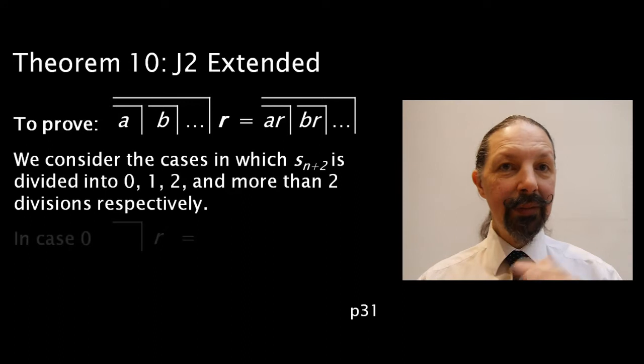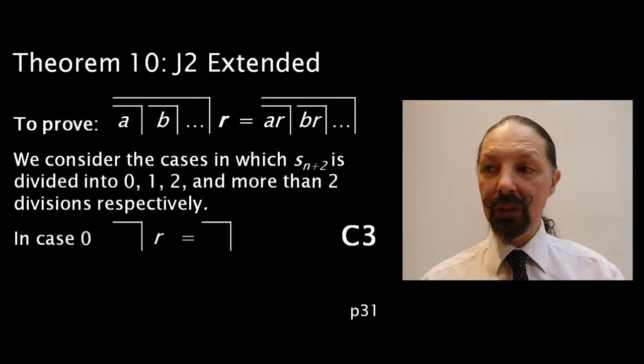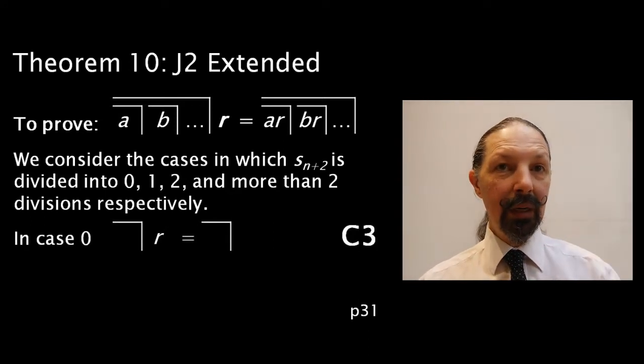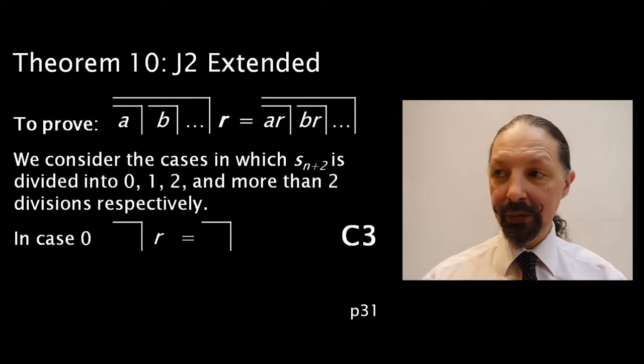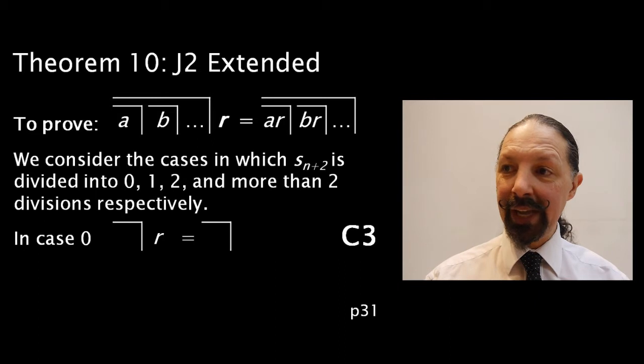First of all, when it's divided into no subsections. Well, we have an empty mark, and we know that by C3, anything next to an empty mark can be got rid of. So, that solves that case.